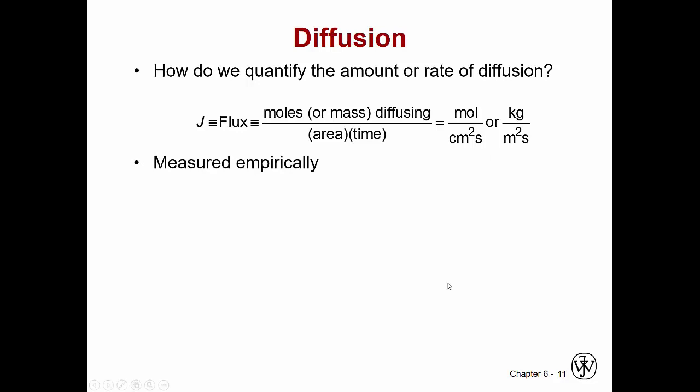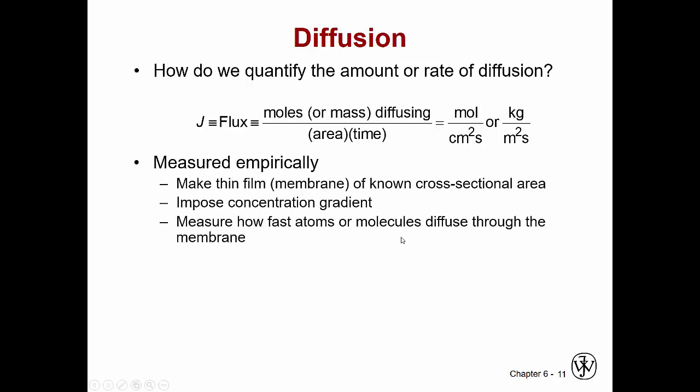This is done empirically so they just do experiments and figure out how it works. They make a thin film and they know the cross-sectional area. They put a particular concentration on the one side and then they see how fast the atoms get to the other side. To calculate this they might have the mass over the area times time but it would be the derivative of mass over time with respect to area and have some constant there to finish it off.